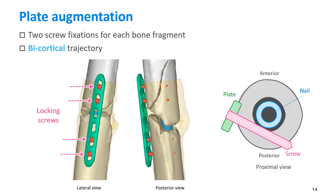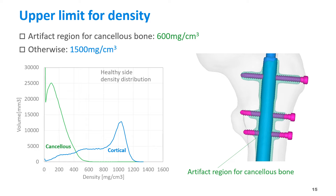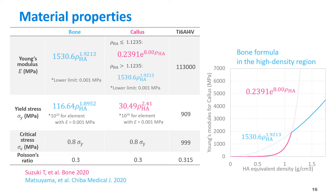A screw is inserted from the lateral side of the femur and exits posteriorly in a bicortical trajectory. In order to reduce the influence of artifact, the upper density limit was set at 600 mg per cubic cm in the cancellous bone region and 1500 in other regions, referring to the density distribution of the healthy side femur.